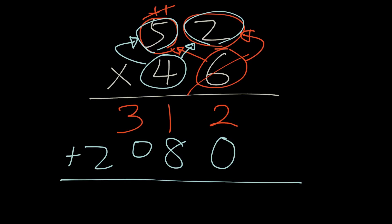And then we'll finish with the addition. 2 plus 0 is 2. 1 plus 8 is 9. 3 plus 0 is 3. And 2, just bring it down. So the final answer is 2,392.